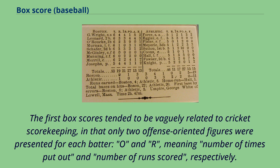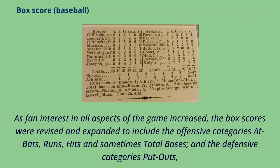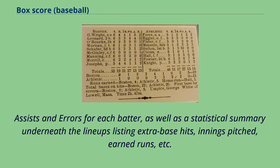The first box scores tended to be vaguely related to cricket scorekeeping, in that only two offense-oriented figures were presented for each batter — O and R, meaning number of times put out and number of runs scored, respectively. As fan interest in all aspects of the game increased, the box scores were revised and expanded to include the offensive categories at-bats, runs, hits and sometimes total bases, and the defensive categories put outs, assists, and errors for each batter, as well as a statistical summary listing extra base hits, innings pitched, earned runs, etc.